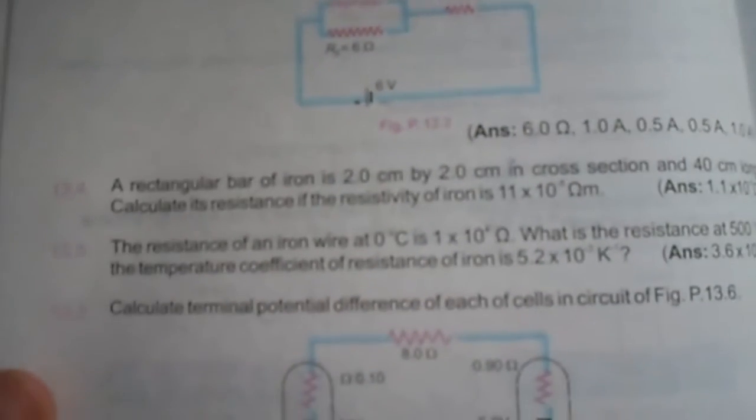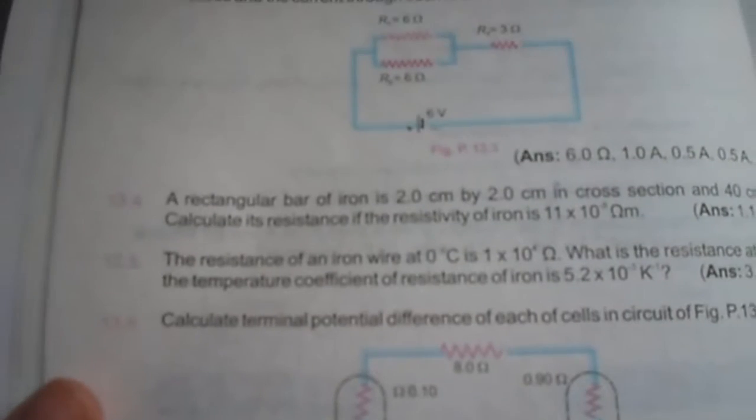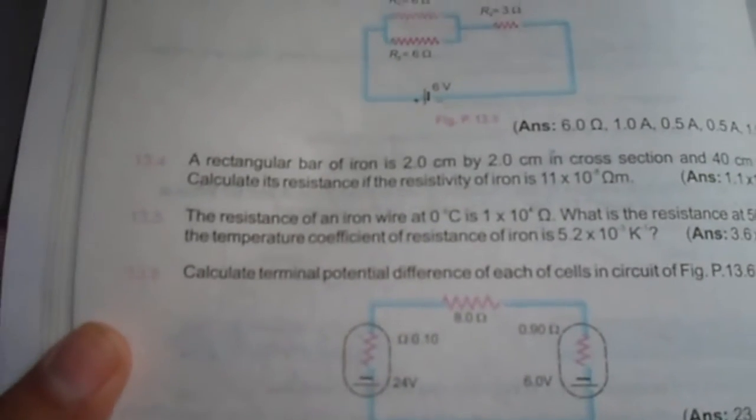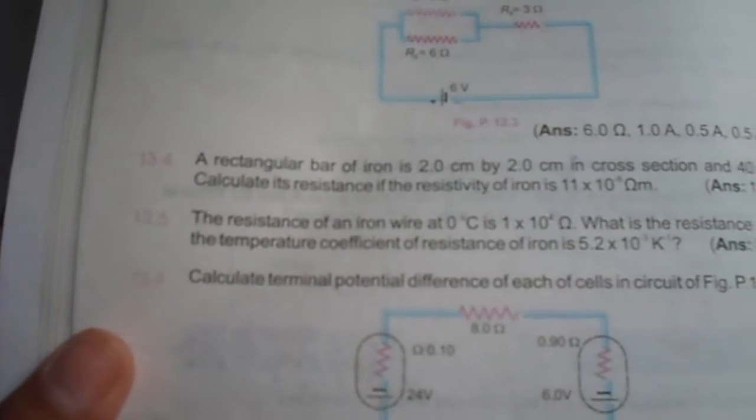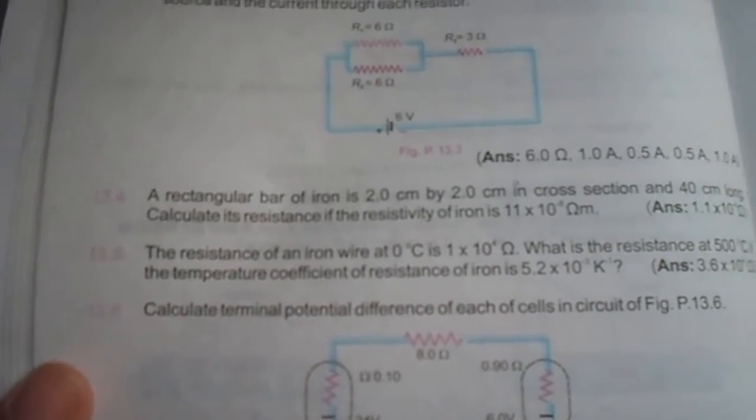We have said that a rectangular bar of iron is 2 cm by 2 cm in cross section and 40 cm long. Calculate its resistance if the resistivity of iron is 11 into 10 to the power minus 8 ohm meter.